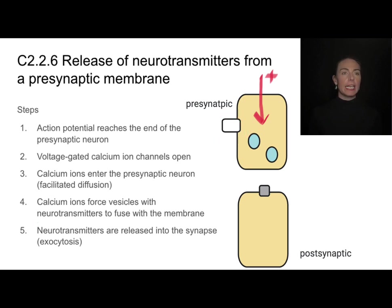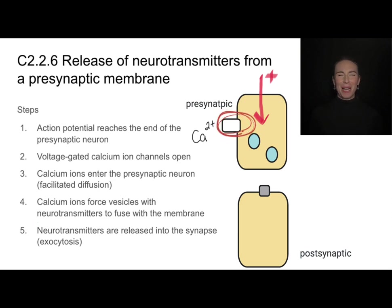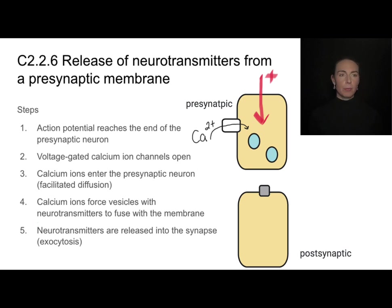These calcium ion channels are voltage gated. On the outside of the pre-synaptic neuron there is a high concentration of calcium ions, so now that the voltage-gated calcium ion channel is open, these calcium ions are free to enter the cell via facilitated diffusion. Once that happens, it's going to force these vesicles full of neurotransmitters to fuse with the membrane.